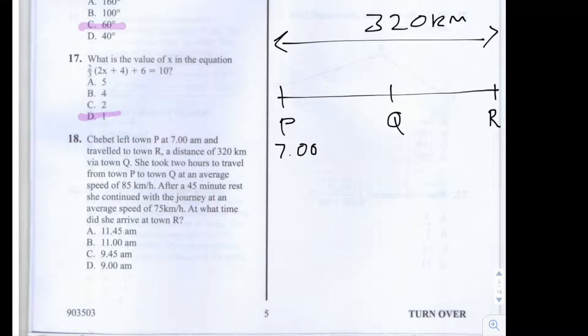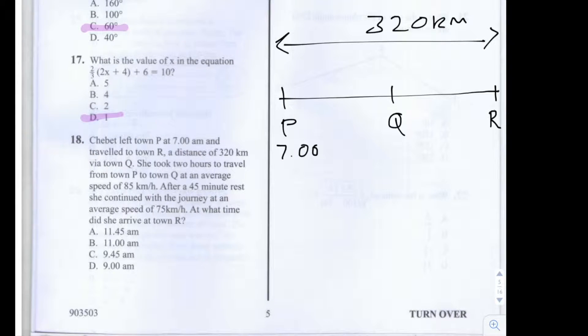It says that she took two hours to travel from P to Q, so that means that she arrived at Q at 9am at an average speed of 85km per hour. And since we know the speed and we know the time it took, we can find out the distance here, the distance PQ.